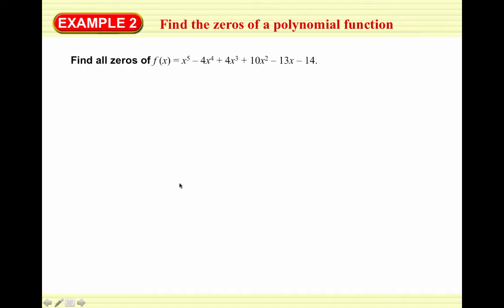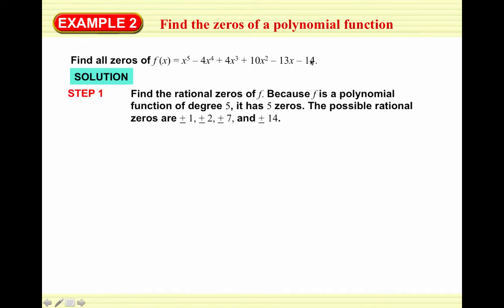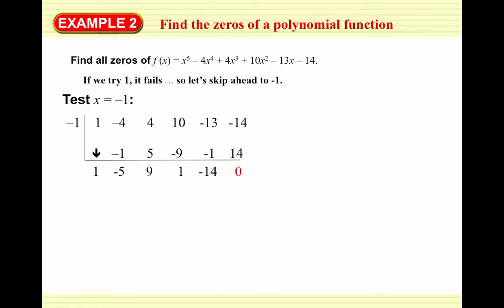Now we'll find the zeros of f(x) = x⁵ - 4x⁴ + 4x³ + 10x² - 13x - 14. From section 5.6, we use the rational root theorem, finding enough zeros until we get down to a quadratic. Our p over q list: plus or minus 1, 2, 7, 14 (since the leading coefficient is 1, q is just plus or minus 1). We start with 1 — it fails. Moving to negative 1.